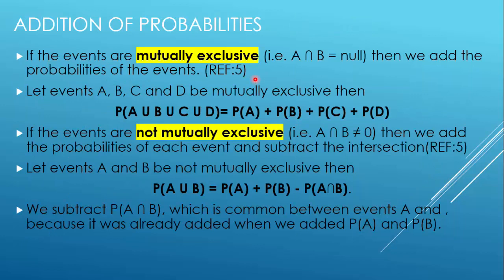When do we add probabilities? If events are mutually exclusive — meaning A intersection B is equal to null — then we add the probabilities of the events. Whenever we have mutually exclusive events, we simply add up the probabilities. So suppose events A, B, C, and D are mutually exclusive; if we want to find the union of these events, we simply add up their probabilities.